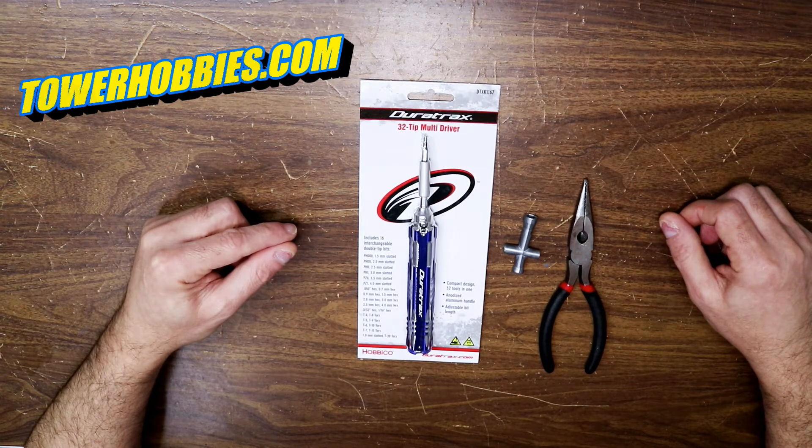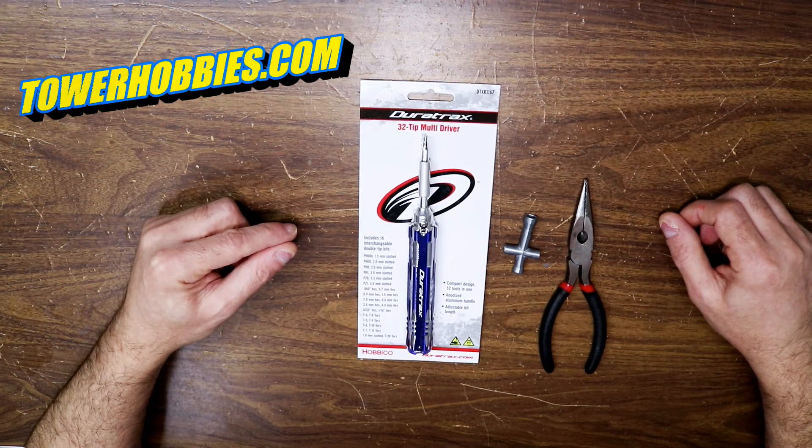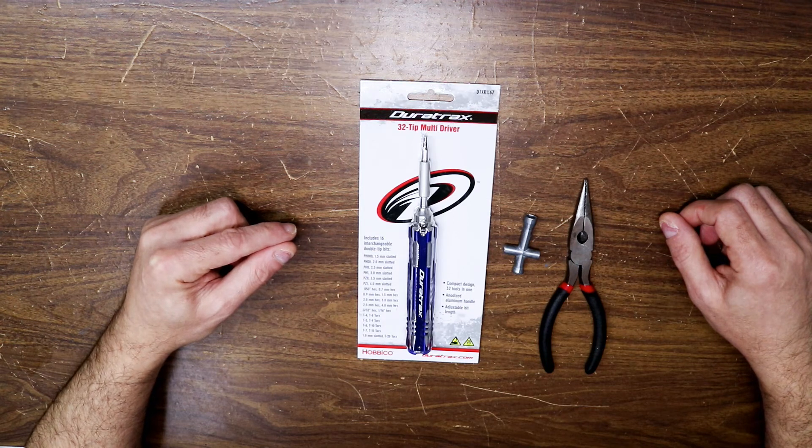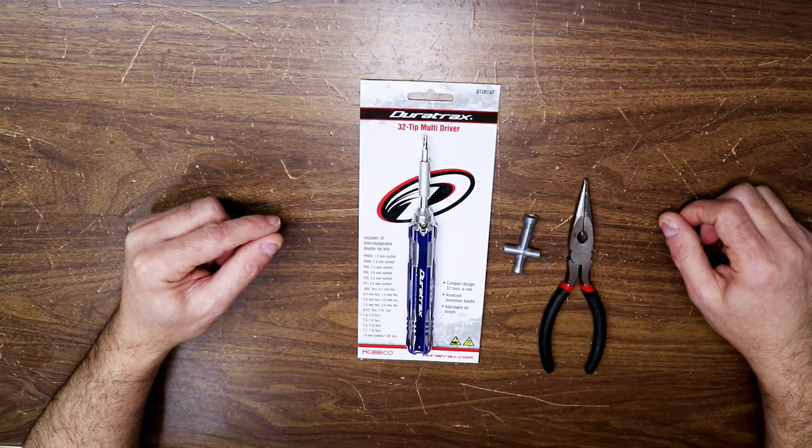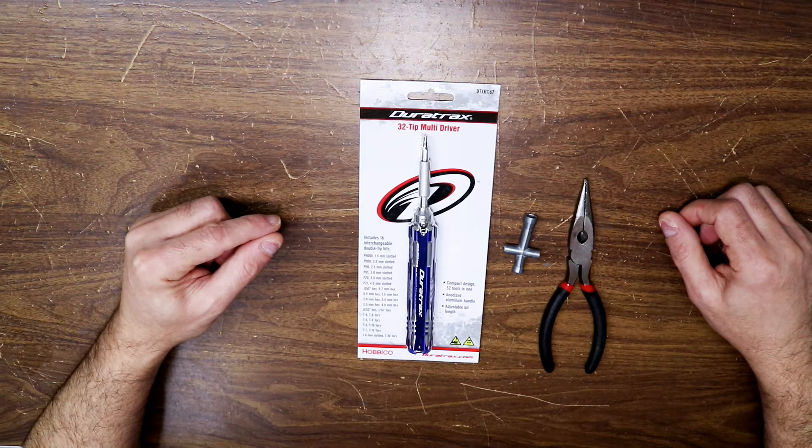I decided to go with this tool because it has 16 bits with two types on each side of the bit. It has slotted, it has Phillips head, it has hexes, and it has Torx bits, the star ones.